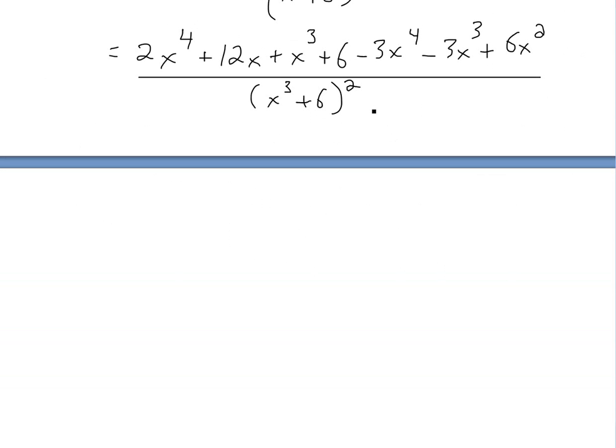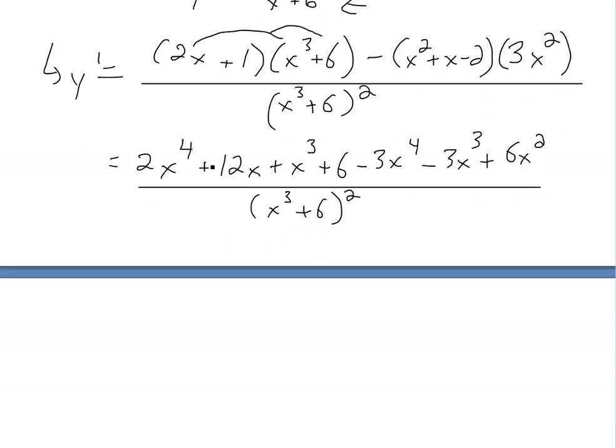So we have this right now, and now we can just combine the like terms. We have 2x⁴ and this negative 3x⁴, so we can add those up, giving negative x⁴. We look at the 12x, there's nothing else. We'll just look at the higher powers first. This x³, there's a negative 3x³ right here, so this is going to be negative 2x³. Look at the x², this is the only one,